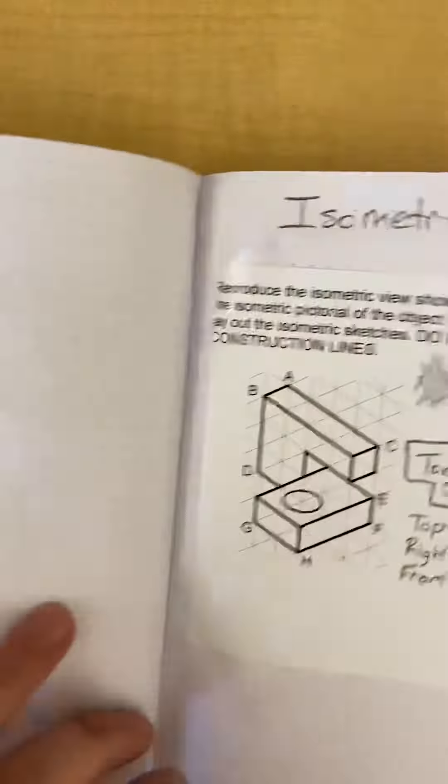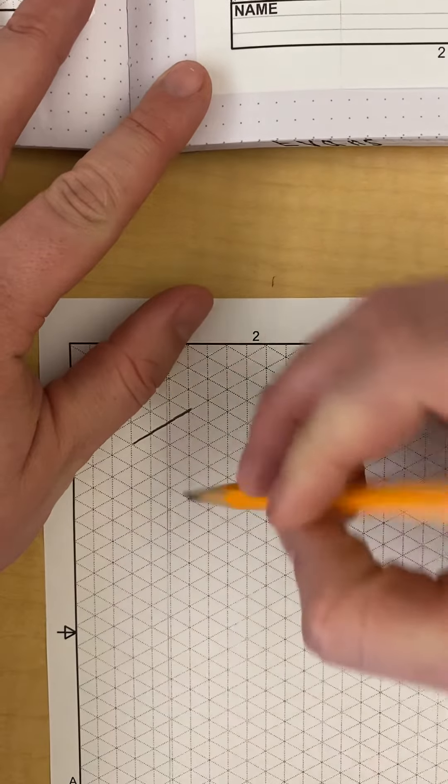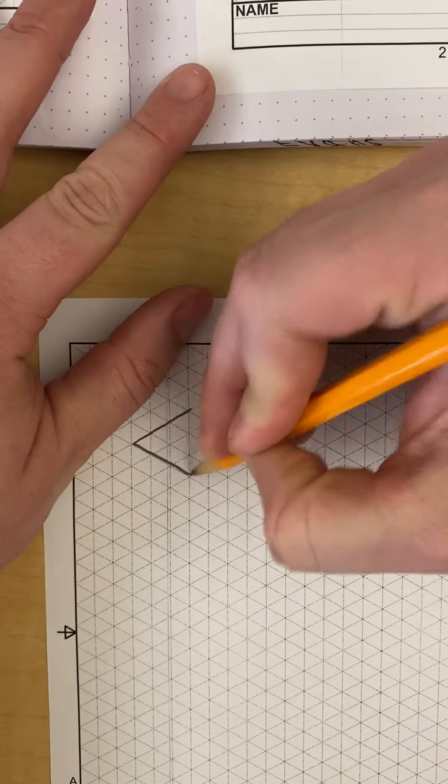Then you've got your isometric sketches. I wanted to show you some quick steps on that if you're having some trouble. Remember, all you're doing is counting. The top box is a three by three box.